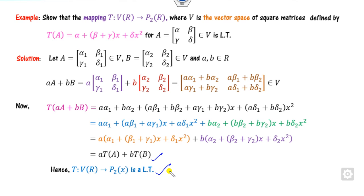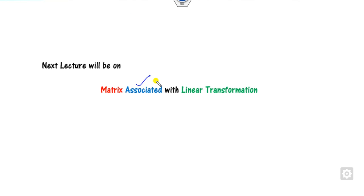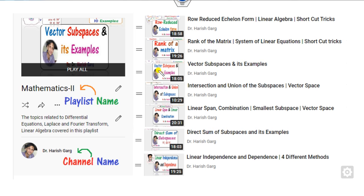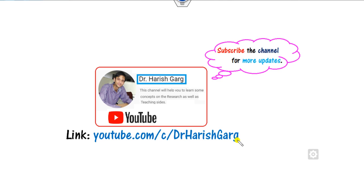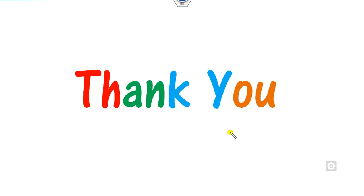This is the way to check whether a mapping is a linear transformation or not. Providing one counter example is enough to prove it is not a linear transformation. In the next class, we will see the matrix associated with a linear transformation. Till then, follow the playlist Mathematics 2, channel named Dr. Harishgarh on YouTube. Best of luck, students!